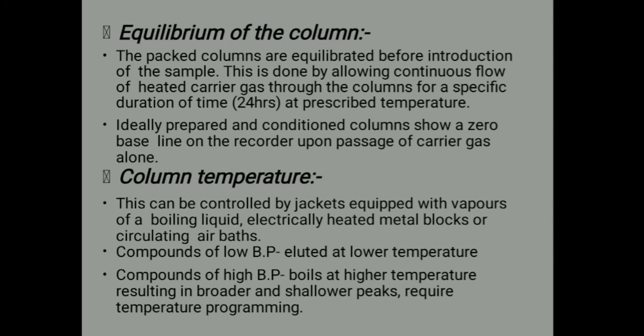Equilibrium of columns: the packed columns are equilibrated before introduction of samples. This is done by allowing a continuous flow of heated carrier gas through the column for a specific duration of time, around 24 hours. An ideal prepared and conditioned column shows a zero baseline on the recorder upon passing of carrier gas alone. Talking about column temperature: this can be controlled by a jacket equipped with vapors of boiling liquid, electrically heated metal blocks, or circulating air baths. Compounds of low boiling point are eluted at low temperature, while compounds of high boiling point require higher temperature, resulting in broader and shallower peaks, requiring temperature programming.